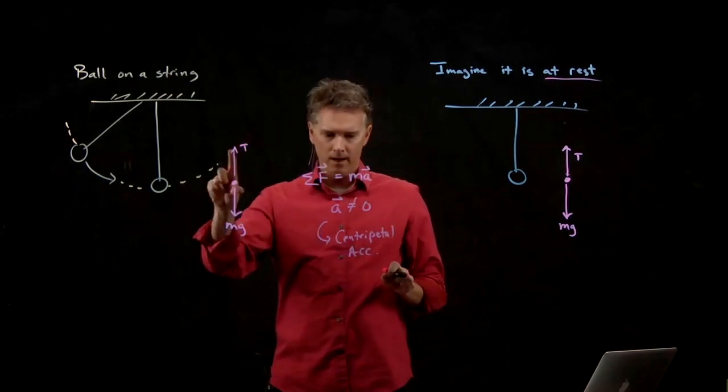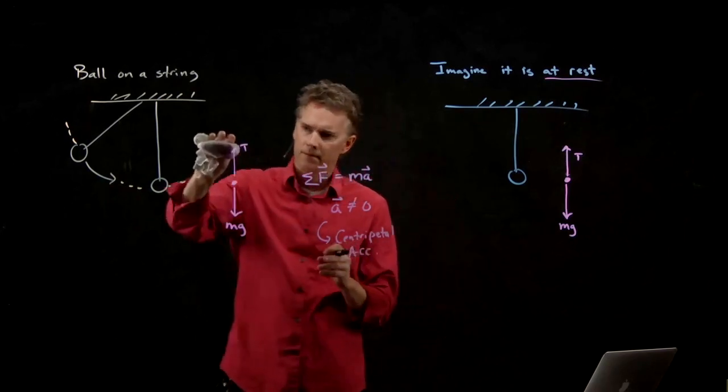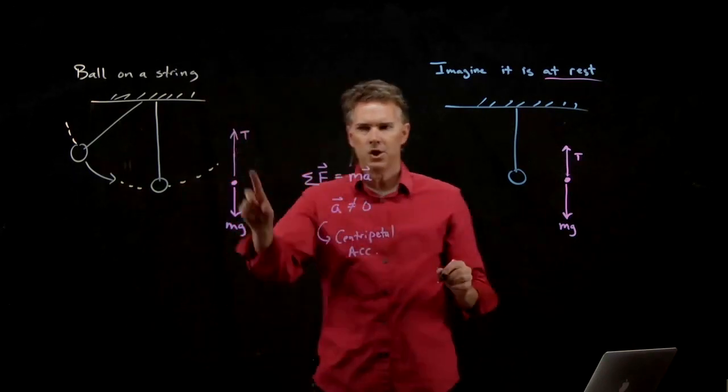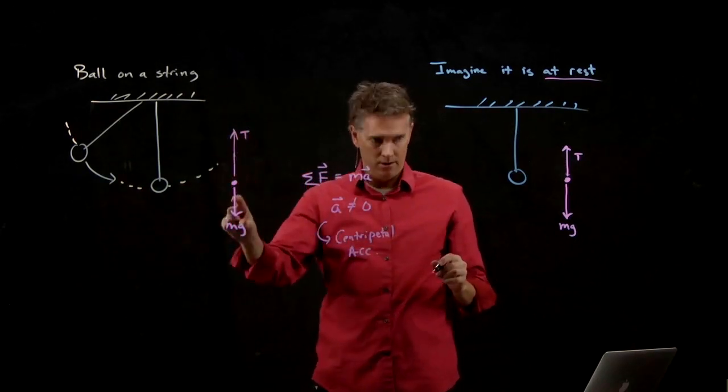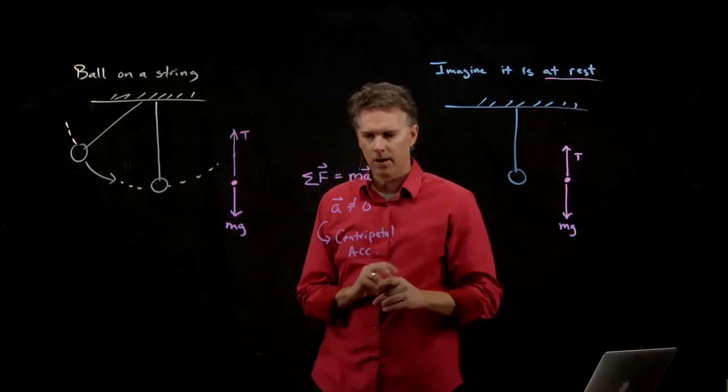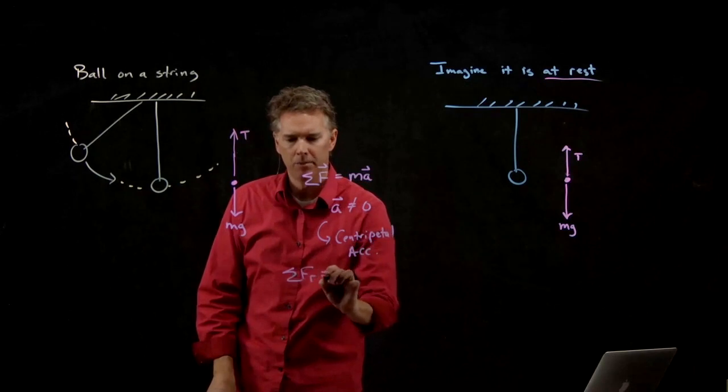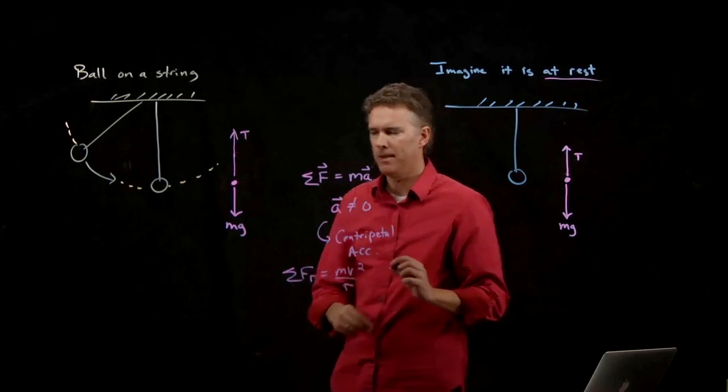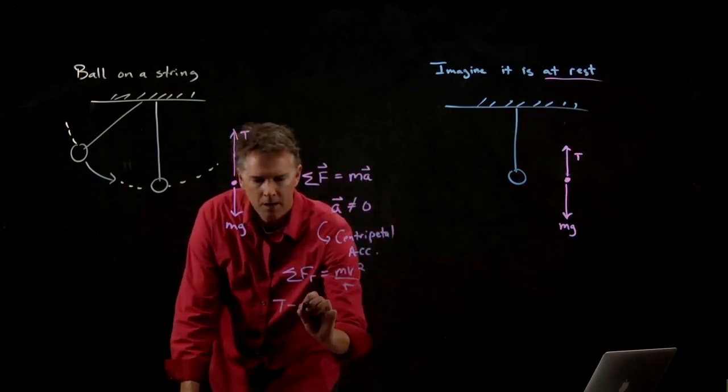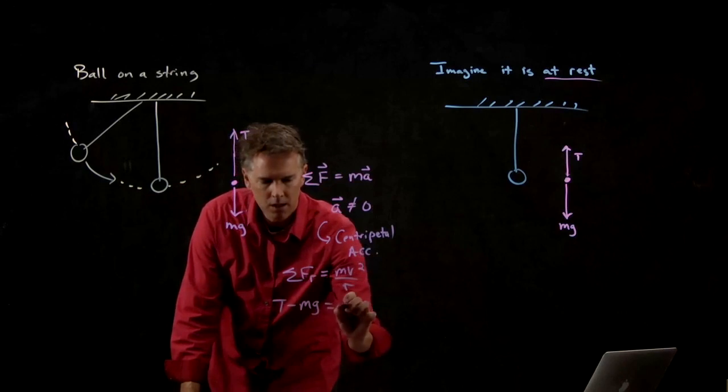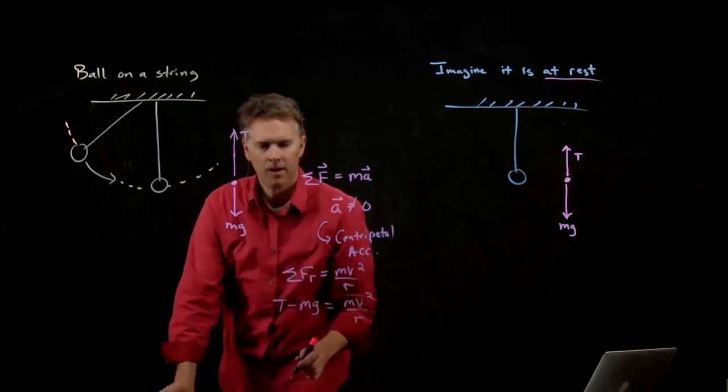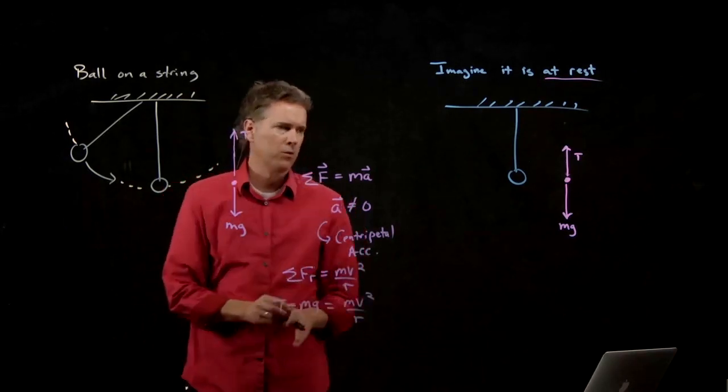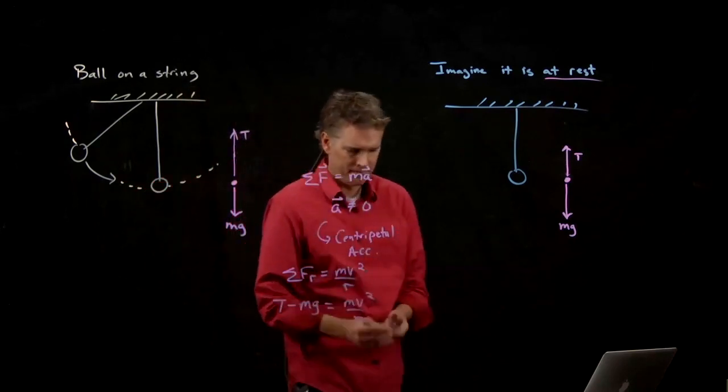And so A is not equal to zero because we have centripetal acceleration. And so this is not quite right. I need to draw it like this. Tension T has to be bigger than mg. How do we see that mathematically? It's very simple. We know that the sum of the forces in the radial direction have to be mv squared over r. We have T minus mg equals mv squared over r. T has to be bigger than mg to get this positive quantity over here on the right.